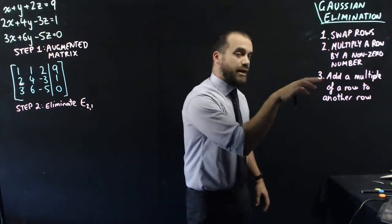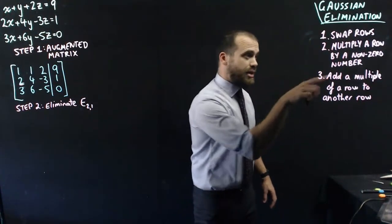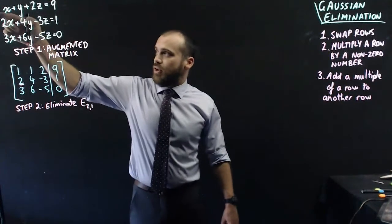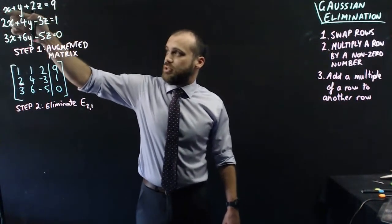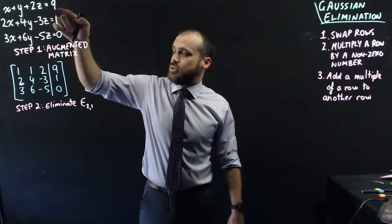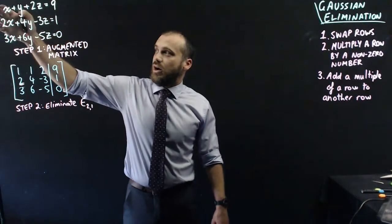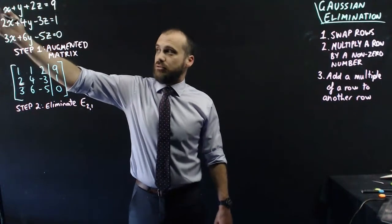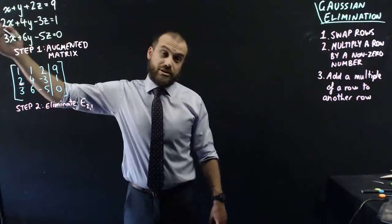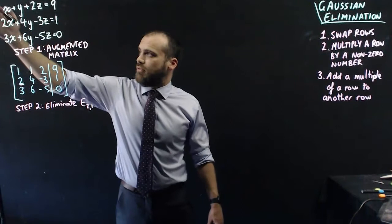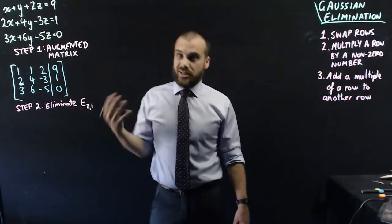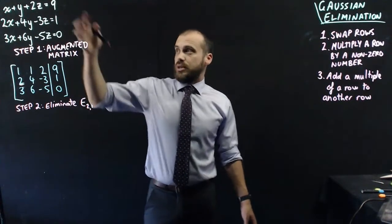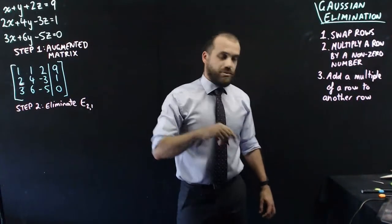Finally, add a multiple of a row to another row. If I multiply all of this by two, I get two x plus two y plus four z equals nine, and then I can add two times that row to that row - or subtract it, same thing. If I subtract it, those x's are going to cancel out. And that's the basic idea - we're doing this, but in an algorithmic way.